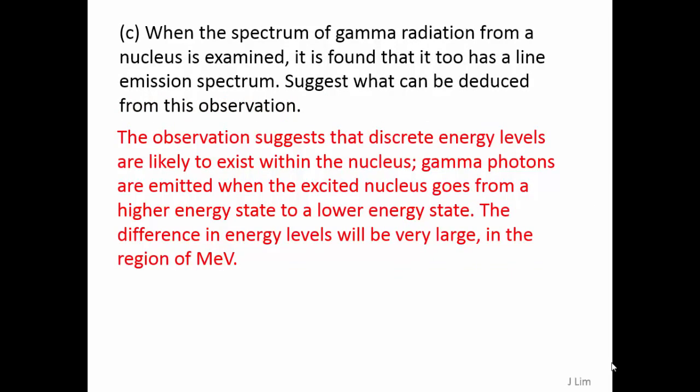The observation suggests that discrete energy levels are likely to exist within the nucleus. Gamma photons are emitted when the excited nucleus goes from a higher energy state to a lower energy state. The difference in energy levels will be very large, in the region of MeV.